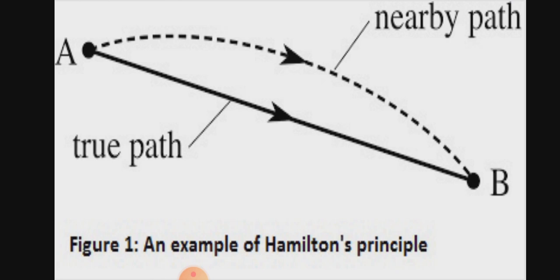I will draw an example of Hamilton Principle. A particle which is moving from point A to point B, there are many choices for the particle to move from A to B, there is a path, nearby path. But Hamilton says that the true path for the particle to move from A to B is the straight line. This is the concept of Hamilton Principle, and this Hamilton Principle says that the Lagrangian integration of Lagrangian is stationary.